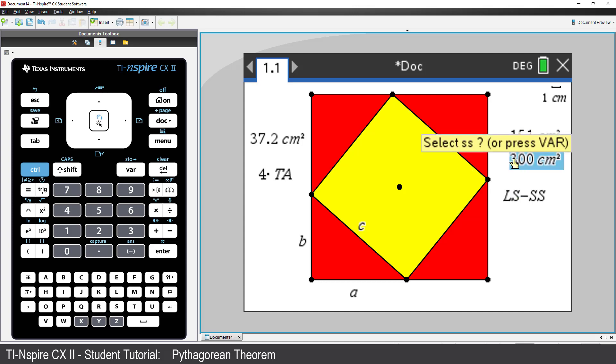Notice the prompt changes to SS. So move the mouse over the area measurement for the small square and click. The resulting calculation is kind of stuck to the mouse. Move the calculated result just beneath the expression and click. Now do the same for the triangle area expression.